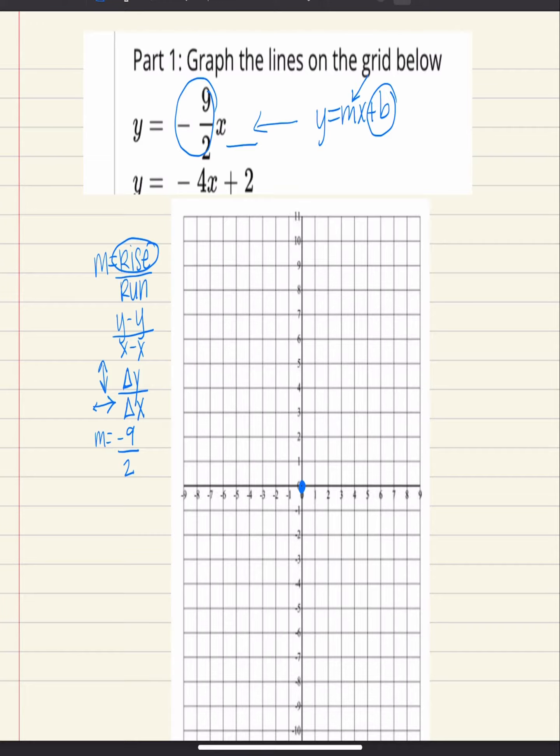And then we're going to run 2, positive 2, that means to the right 2. Once you have done your rise and your run, that's when you place your dot. Once you have two dots on your graph, you can connect them. And these would be my line.